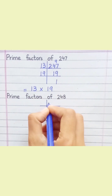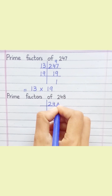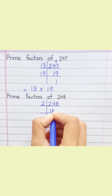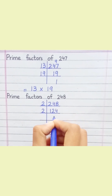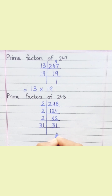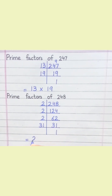Prime factors of 248. Two ones are two. Two twos are four. Two fours are eight. Two sixes are twelve. Two twos are four. Two threes are six. Two ones are two. Thirty-one ones are thirty-one. Equal. Two multiply two multiply two multiply thirty-one.